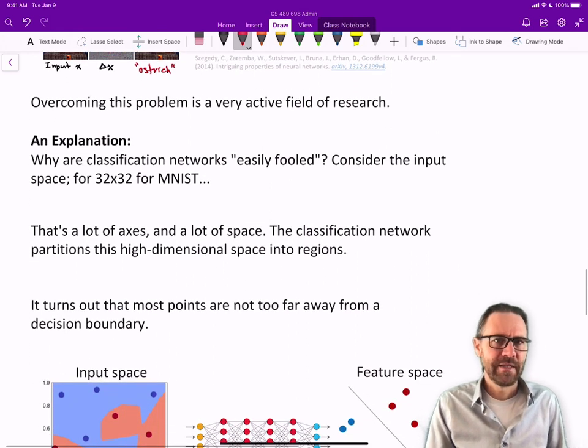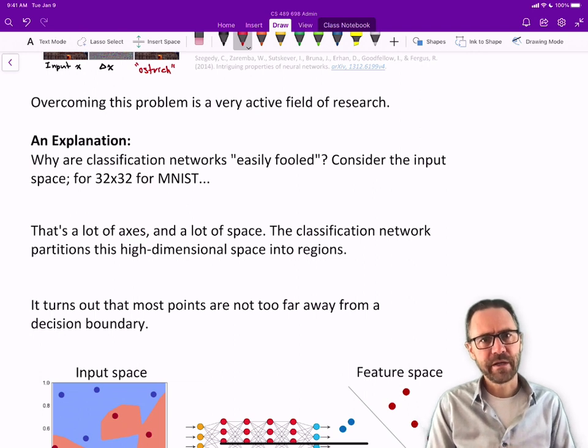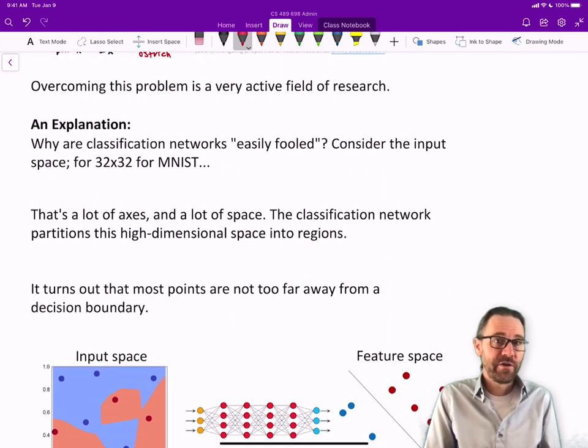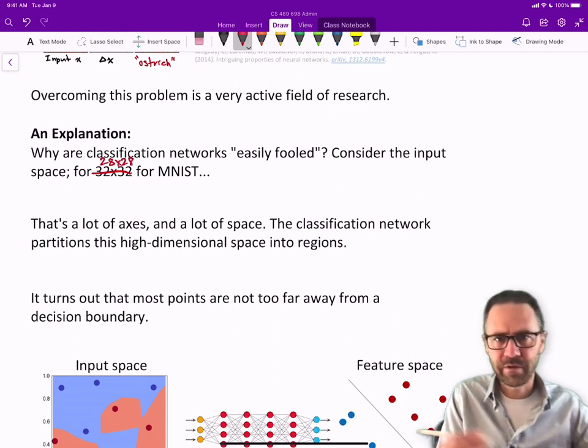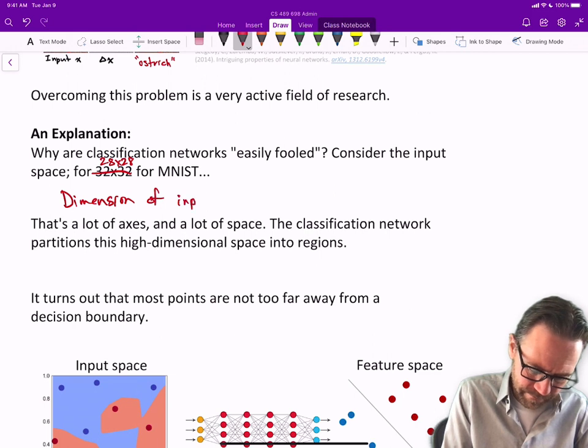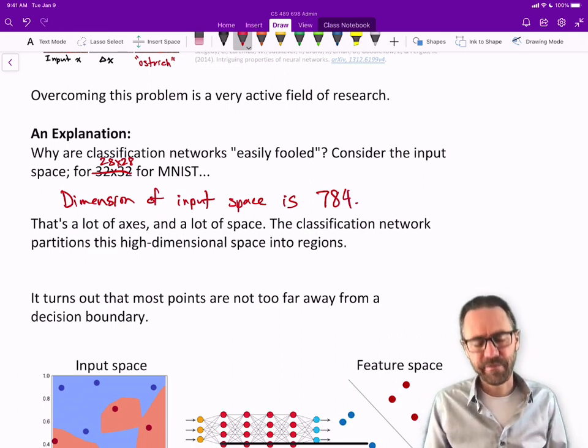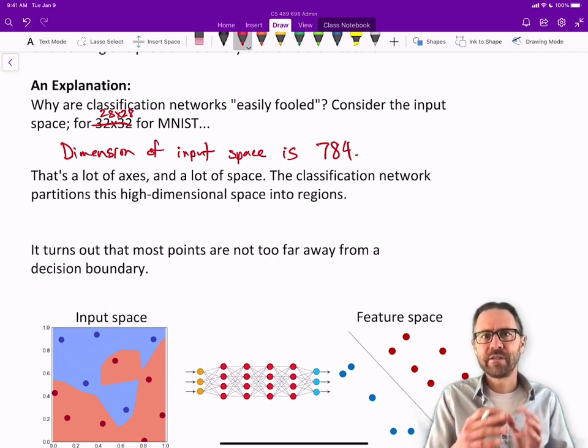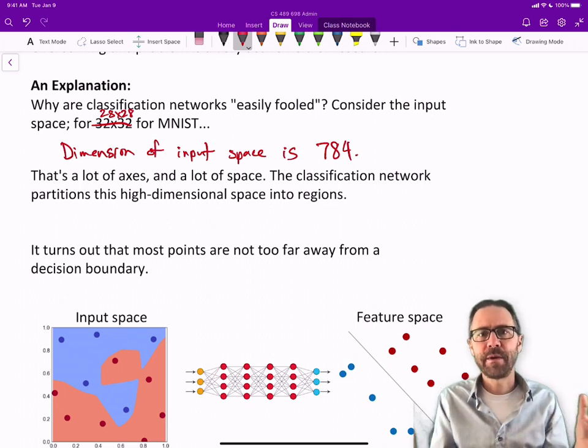An explanation: can we figure out why this is happening? Nobody knows for sure, but there are some ideas. Why are classification networks so easily fooled? Consider the input space. For MNIST, it's 28 by 28, which is 784 dimensions. By now, you've memorized that 28 times 28 is 784. That's a lot of axes. There are 784 different axes. Picture three space, now picture 781 more axes. That's the dimensionality of the space your inputs are coming from.